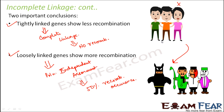In Mendel's experiments that is how it was, and that is why he gave the principle of independent assortment. The principle of independent assortment holds true only for unlinked genes or genes located far apart on the same chromosome. This was the concept of linkage.